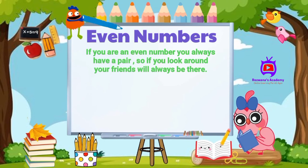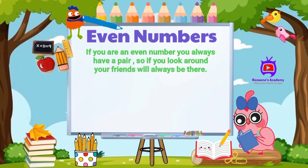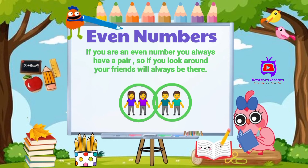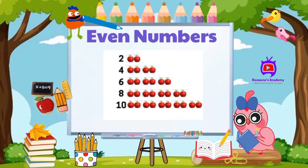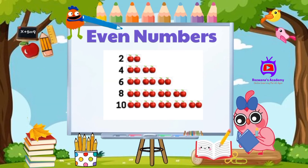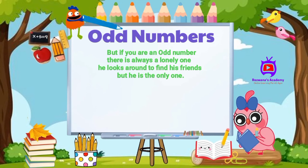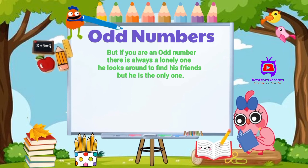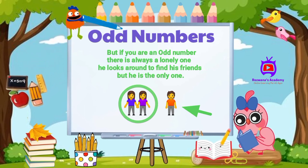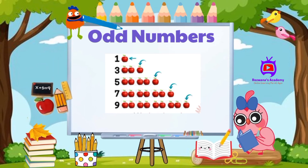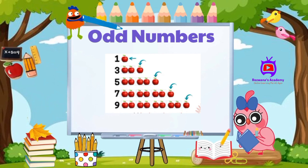Let us now summarize. If you are an even number, you always have a pair — your friend will always be there. Two, four, six, eight, and ten are all even numbers. But if you are an odd number, there is always a lonely one who looks around to find a friend but is the only one left. So one, three, five, seven, and nine are all odd numbers.